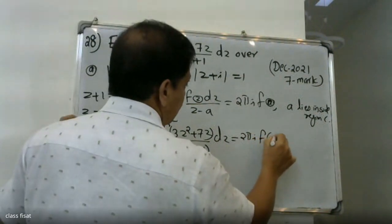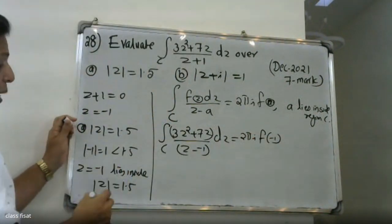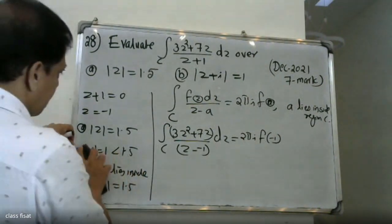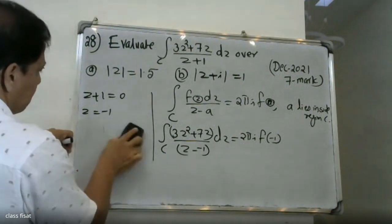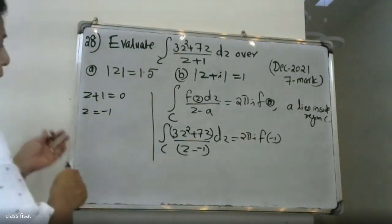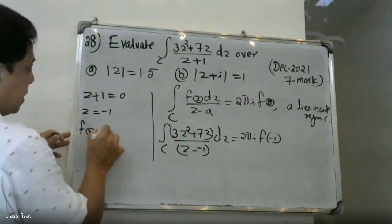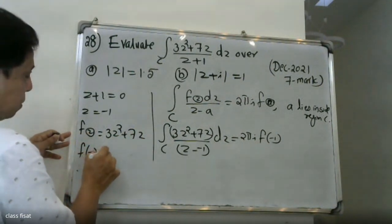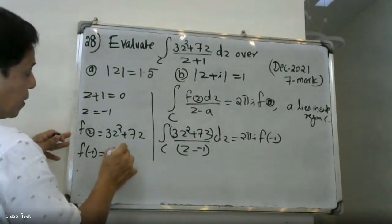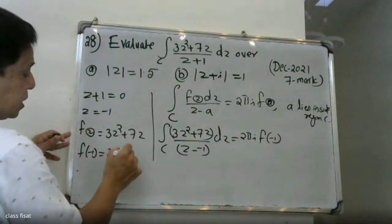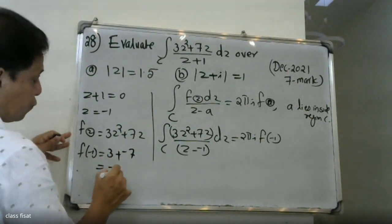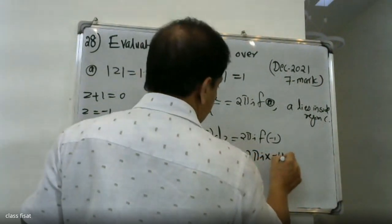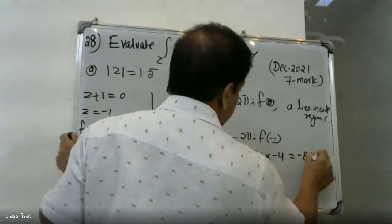We calculate f of minus one. f(z) is equal to three z squared plus seven. So f(minus one) equals three times (minus one) squared plus seven, which gives three times one plus seven. Therefore f(minus one) equals minus four. The answer will be minus eight, times two pi i.